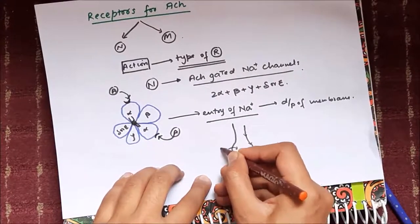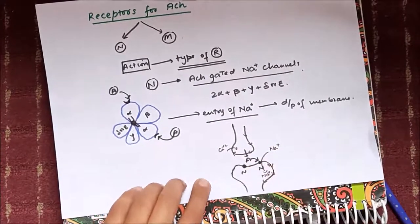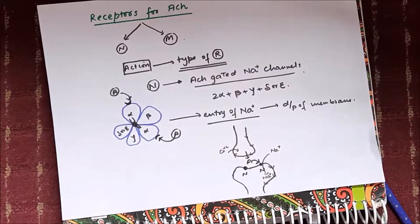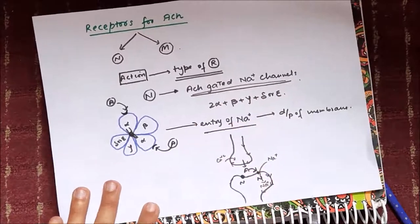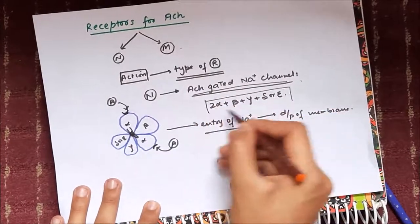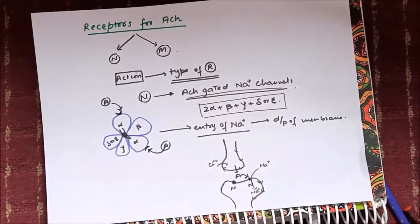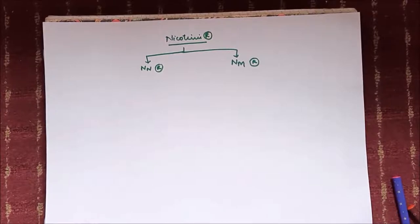The action potential traveling along the first neuron eventually causes calcium entry and release of acetylcholine, and this action potential is then propagated into the second neuron. This is how acetylcholine works at nicotinic receptors.